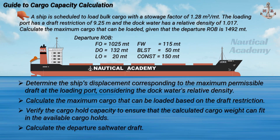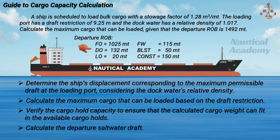Let's consider the following scenario. Our ship is scheduled to load bulk cargo with a stowage factor of 1.28 cubic meters per metric ton. The loading port has a draft restriction of 9.25 meters, and the dock water has a relative density of 1.017. Calculate the maximum cargo that can be loaded, given that the departure ROB or non-cargo weight is 1,492 metric tons. We will also calculate the fill percentage to verify whether the calculated cargo weight can actually fit within the ship's cargo holds.